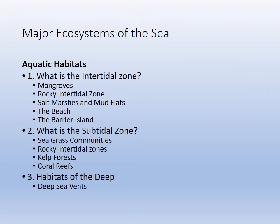The major ecosystems of the sea include what we call the intertidal or littoral zone, the mangroves, the salt marshes, mudflats, beaches, and barrier islands. We also have the rocky intertidal zone — found in New England on the east coast and much of the west coast — characterized by a hard substrate, algae, and colder water. Right after that is the subtidal zone, which is below the tides but still fairly shallow, and then lastly deep sea vents.